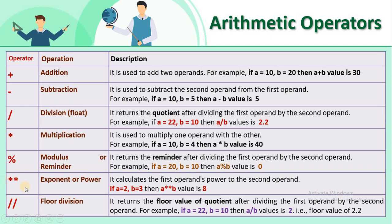The exponent operator, which is not available in C or C++, uses two star symbols (**). It is called the exponent or power operator. For example, if a = 2 and b = 3, then a ** b means 2 to the power of 3, which gives 8.